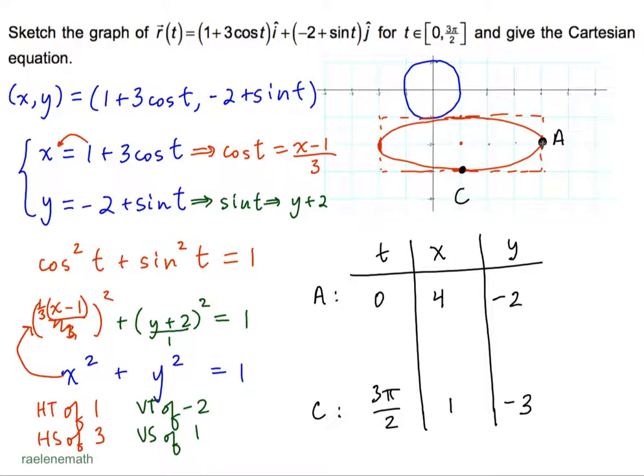So, let's pick another point, maybe π/2, to see what happens in between times. Cos(π/2) = 0, plus 1 is 1. Sin(π/2) = 1, plus -2 is -1. And the point (1, -1) is here. And so, we can see movement this way.